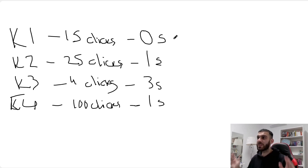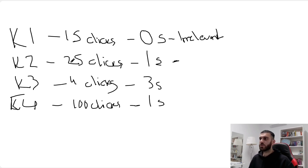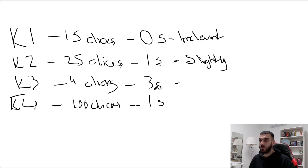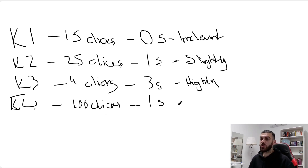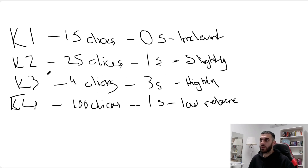Without even knowing what the keywords are, let's see if they're relevant. Fifteen people clicked based on keyword one and zero bought — that's completely irrelevant. Keyword two got 25 clicks and one sale — slightly relevant because you actually got a sale. Keyword three got four clicks and three sales — almost everyone who clicked bought it, so it's highly relevant. Keyword four got 100 clicks and one sale — super low relevance compared to keyword three, which only needed 25 clicks to get the same one sale.